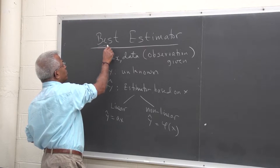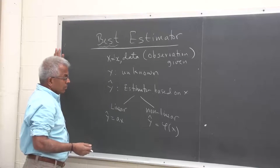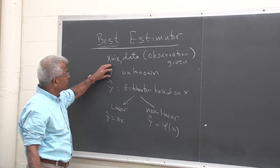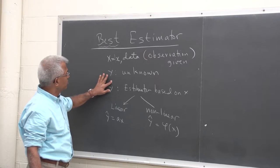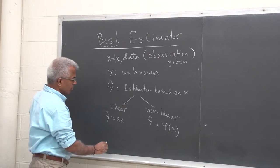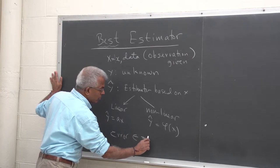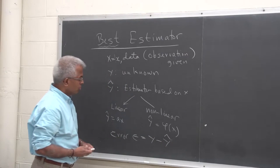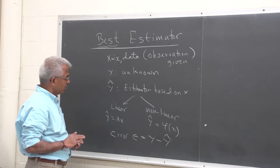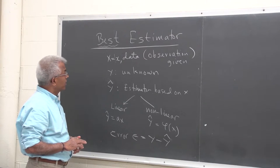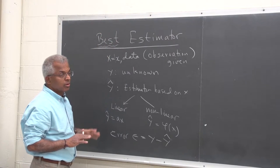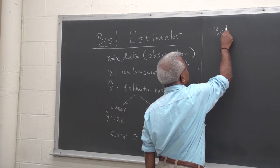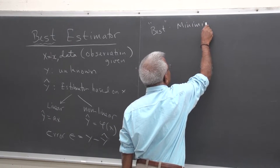So then the question is: what do we mean by best? The idea is that if you have an estimator, it should hopefully be very close to the unknown we are looking for. The difference between the estimator and the unknown will be the error — epsilon equals y minus y-hat. One sensible criterion would be to minimize the error, or since the error could be positive or negative, minimize the mean squared error.